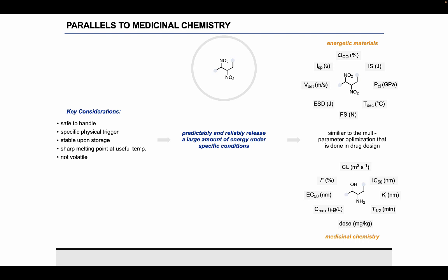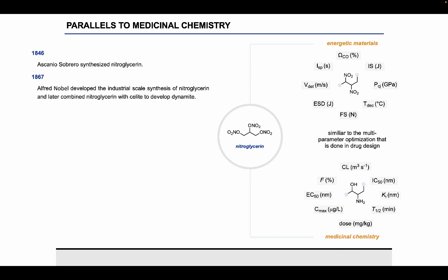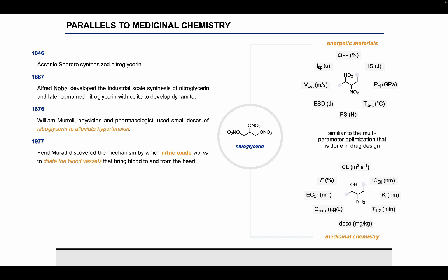A unique historical example would be nitroglycerin, which was first synthesized in the mid-1800s. It was Alfred Nobel who developed the industrial scale synthesis of nitroglycerin. About a decade later, physicians and pharmacologists started using small doses of nitroglycerin to alleviate hypertension. About a hundred years later, they discovered the mechanism by which nitric oxide works to dilate the blood vessels around the heart, which is essentially what nitroglycerin is doing. Now today, we still work on different drugs to alleviate hypertension that are much more complex. This type of understanding we were able to gain really started from this energetic material. It's an interesting bridge between these two areas.